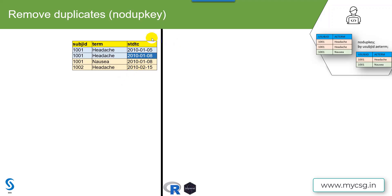Here I have an example dataset of adverse events with data for two subjects, 1001 and 1002. Subject 1001 reported headache twice — once on 5th January 2010 and again on 8th January 2010 — and nausea on 8th January 2010. Subject 1002 reported headache on 15th February 2010. The requirement is to keep only one record per subject and term, and where more than one exists, keep the earliest record.